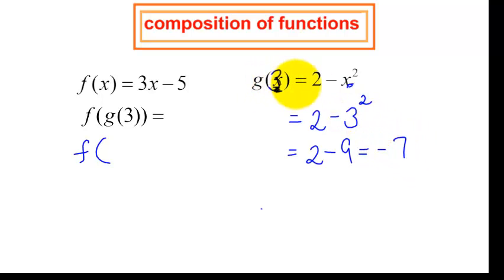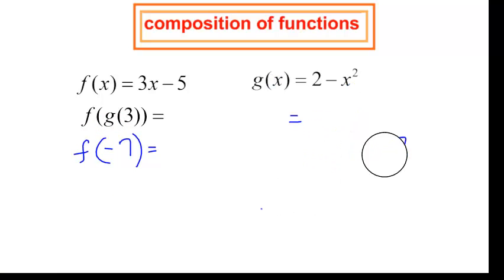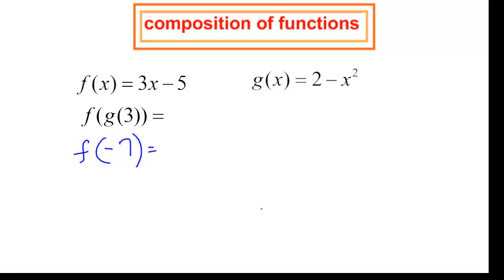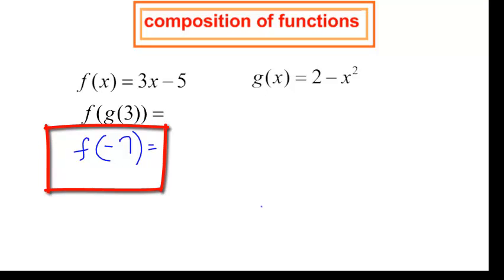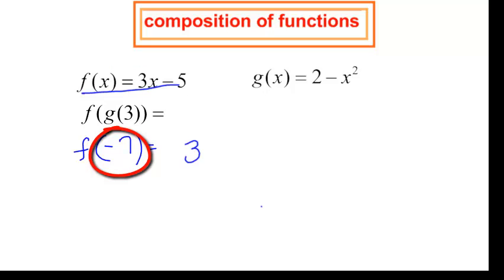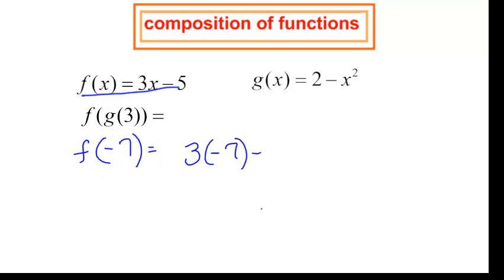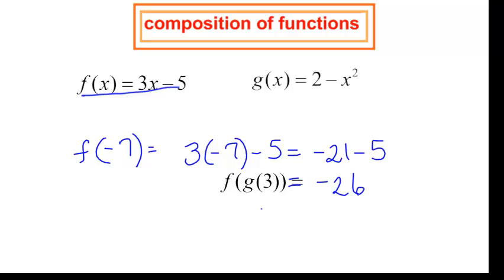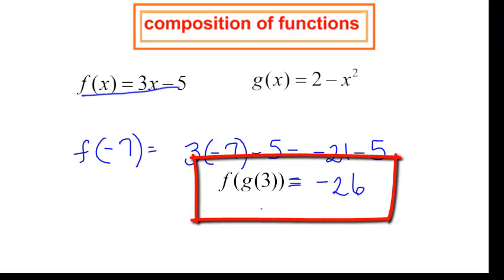So g at 3 is negative 7. Am I done? No, we can keep going. Now I am not interested in the g function anymore — I want to find f at negative 7. Looking at my f function, wherever I see x I plug in negative 7. So f at negative 7 is 3 times negative 7 minus 5, which is negative 21 minus 5, equal to negative 26. So f at g at 3 is equal to negative 26.